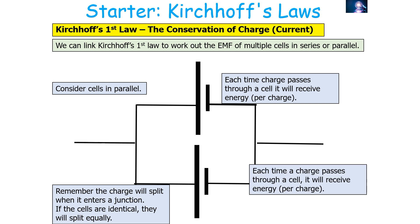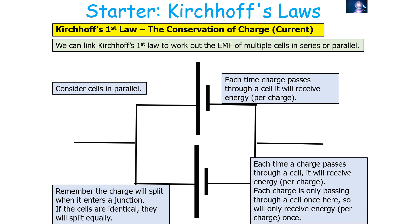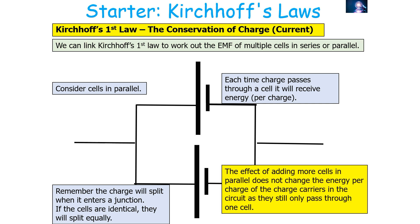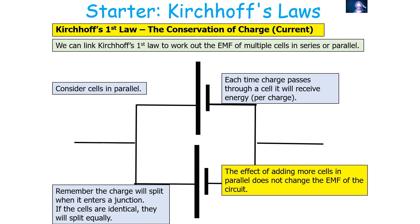Each time a charge passes through a cell it does receive its energy per charge, but each charge is only passing through one cell — it only takes one of the possible routes, which hits one cell in parallel. So the effect of adding more cells in parallel does not change the energy per charge of the charge carriers, because those charge carriers will only pass through one cell in this configuration. Therefore, adding more cells in parallel does not change the total EMF.